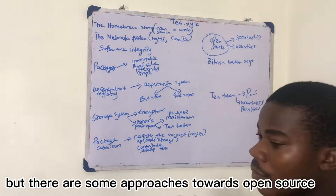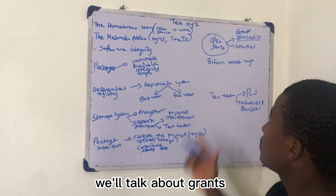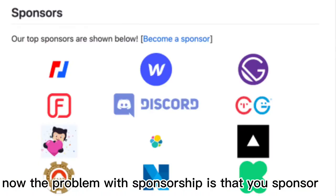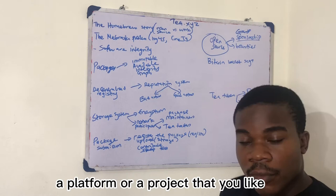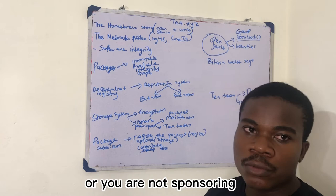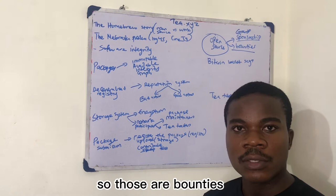There is simply no way. But there are some approaches towards open source. We have the likes of sponsorship, grants, event sponsorship and the rest. Now the problem with sponsorship is that you sponsor a platform or a project that you like. What about the ones that didn't come to your notice? They don't get anything. What about bounties? Bounties are not bad, but bounties basically you are paying for what you want, the feature you want.